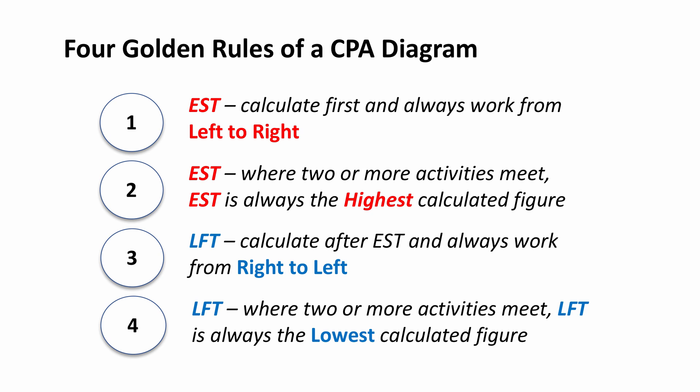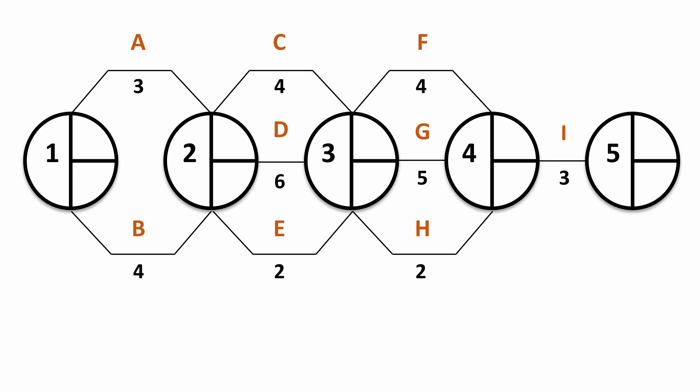Let's work through this. This is our original network diagram and we're going to firstly calculate what the earliest start times are to work out the project completion time. Then we'll work backwards very quickly to show the latest finishing times and spot the critical path. What we'll then do is introduce some delays to the project and see what the effect is. Now you may want to pause the video here and have a go yourself at working out the earliest start times and the project completion time.